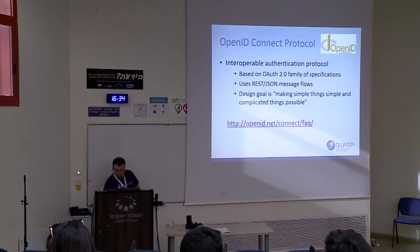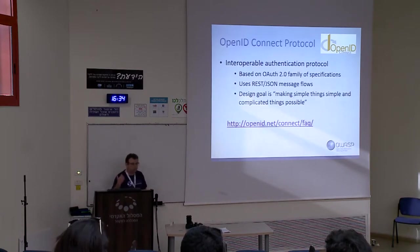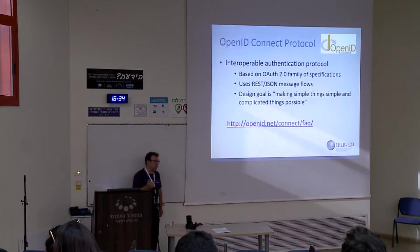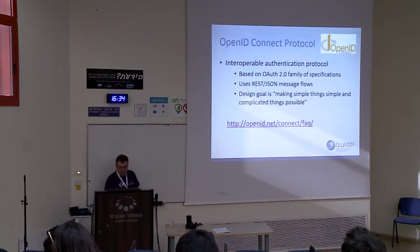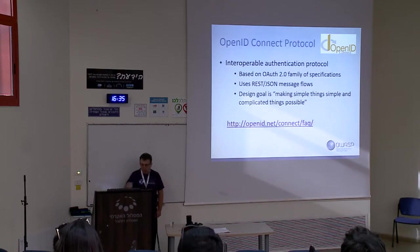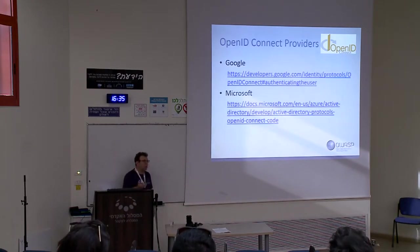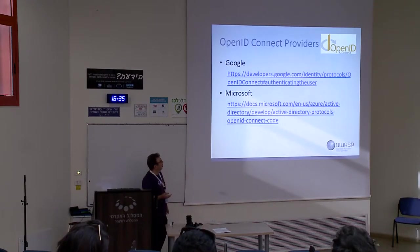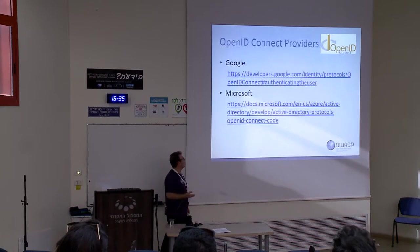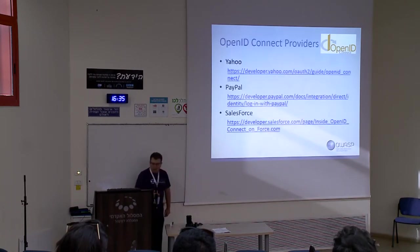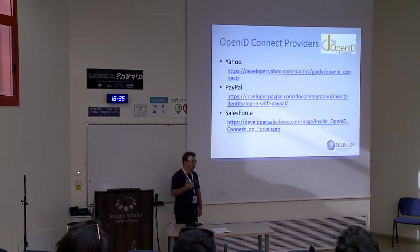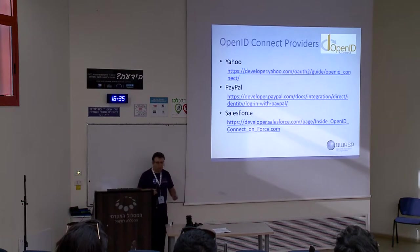OpenID Connect is based on OAuth2. It uses REST and JWT messages. It's a simple and extendable protocol. Many big companies and vendors have adopted OpenID Connect. If you adopt OpenID Connect, you will be able to authenticate your application against Google, Microsoft, Yahoo, PayPal, and many others. The list of companies providing OpenID Connect is growing.